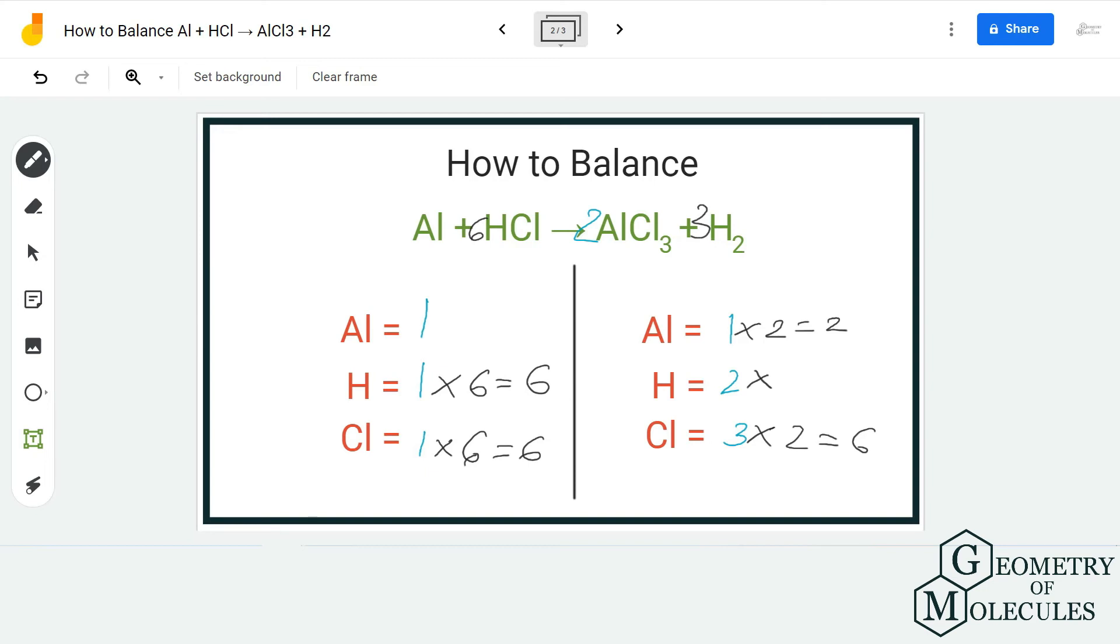Now if you look at this equation, the number of atoms of hydrogen and chlorine are balanced. To balance the aluminum I just need to add a coefficient 2. I'm going to add a coefficient 2 on the reactant side and voila, it's done! You have a balanced equation.